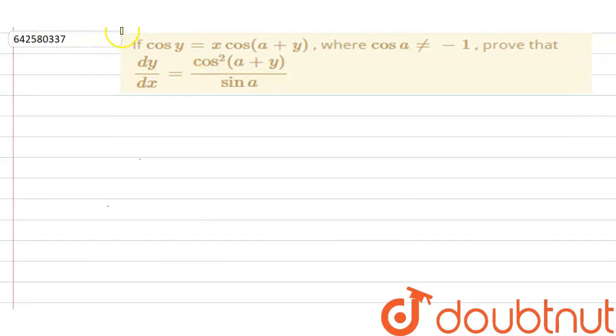Hello everyone, so our question is: if cos y is equal to x cos(a + y), where cos a does not equal minus 1, prove that dy/dx is equal to cos squared(a + y) upon sin a.